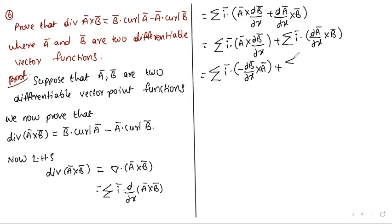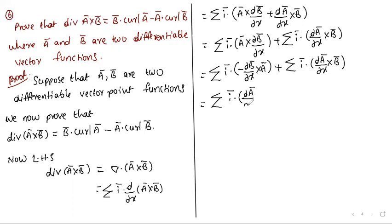Applying the second note point — Ā·(B̄ cross C̄) equals (Ā cross B̄)·C̄ — this becomes: summation of (i-bar cross ∂Ā/∂x)·B̄ minus summation of (i-bar cross ∂B̄/∂x)·A̅.